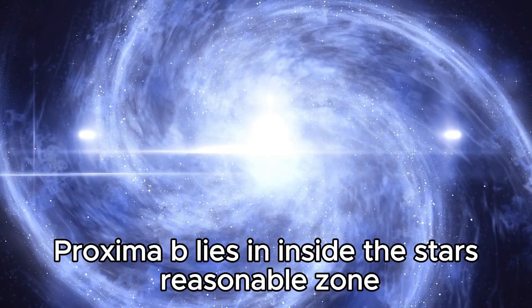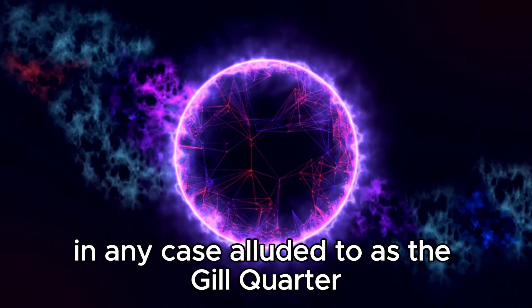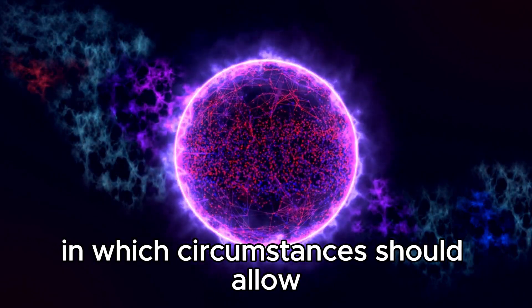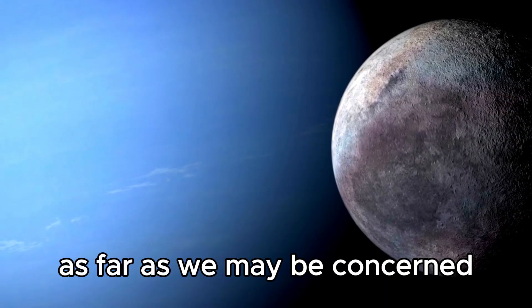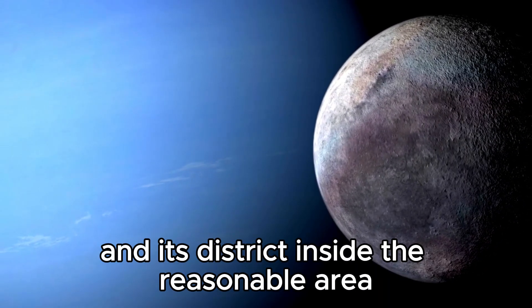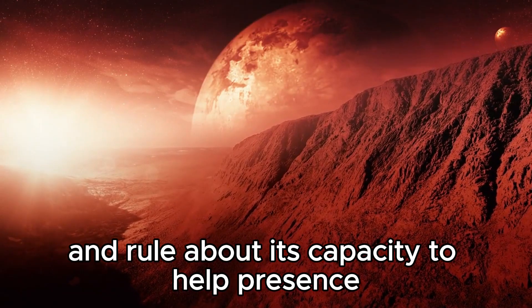Discovered in 2016, Proxima b lies within the star's habitable zone, also referred to as the Goldilocks zone. This is the region around the star where conditions could allow the presence of liquid water, a crucial component for life as we know it. Proxima's close location to Earth and its position within the habitable zone have created huge interest about its capacity to support life.